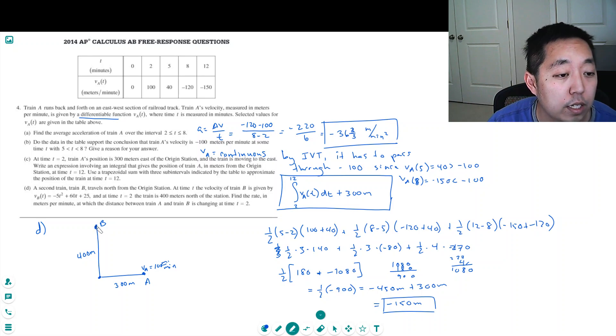Train A is traveling at 2 seconds with velocity equal to 100 meters per minute. VB at 2 equals minus 5 times 4 plus 60 times 2 plus 25, which equals minus 20 plus 120 plus 25, equal to 125. So VB is 125 meters per minute going northward.